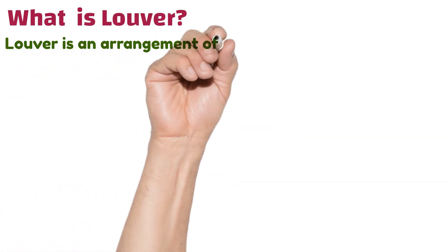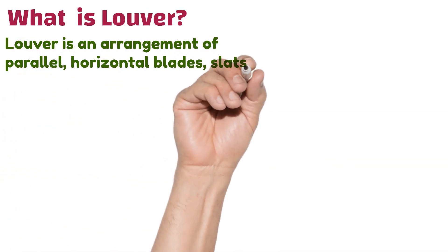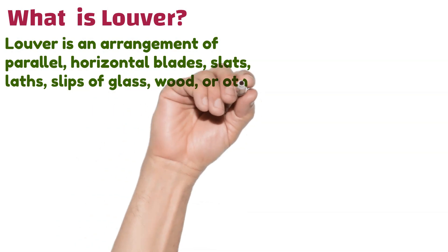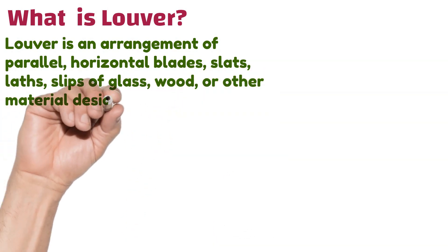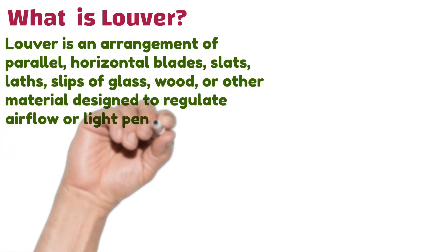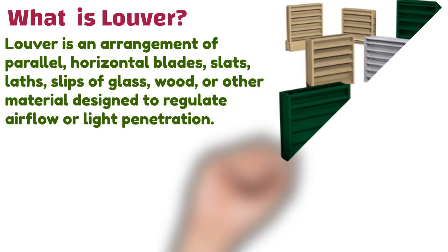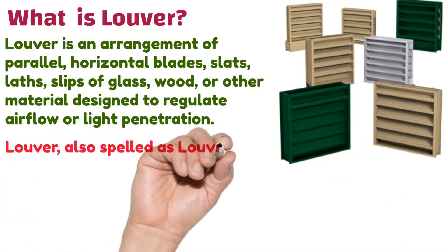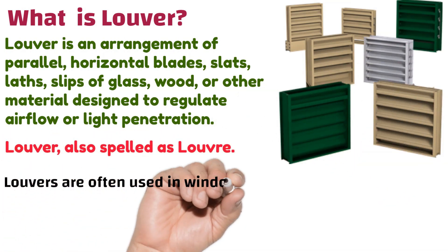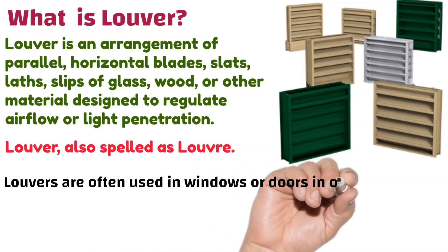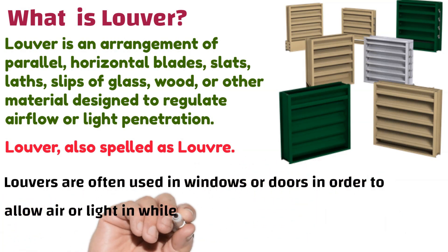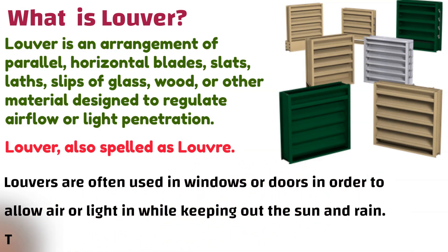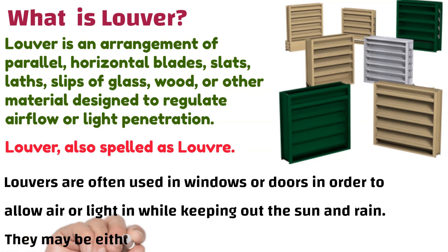First, let's look at what a louver is. A louver is an arrangement of parallel horizontal blades, slats, laths, or slips of glass, wood, or other material designed to regulate airflow or light penetration. Louver is also spelled as 'louvre.' Louvers are often used in windows or doors in order to allow air or light while keeping out the sun and rain.